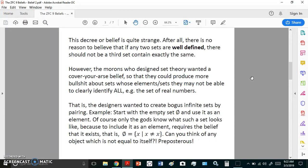It's quite strange because there is no reason to believe that if any two sets are well defined, there should not be a third set containing exactly the same, right? But the morons who designed set theory wanted a cover-your-arse belief so that they could produce more bullshit about sets whose elements or sets they may not be able to clarify or clearly identify all the elements. For example, the set of real numbers, you cannot identify all the elements of that fictitious set. There is no distinct set of real numbers.